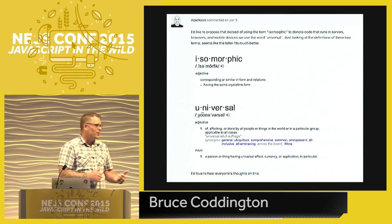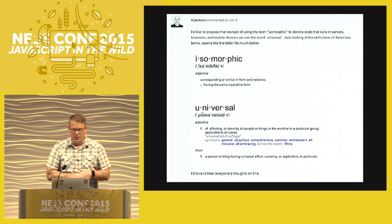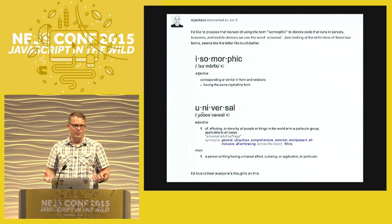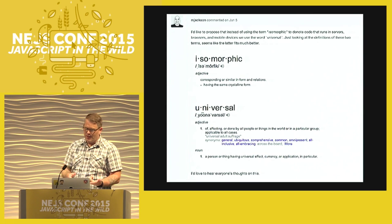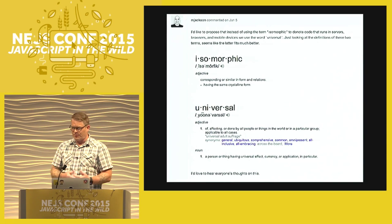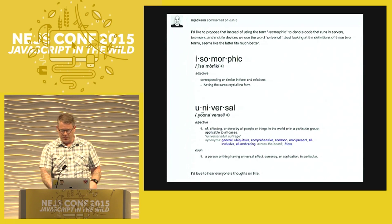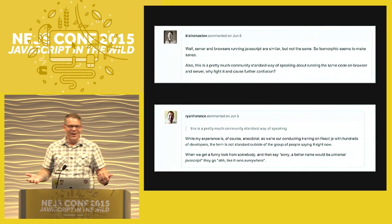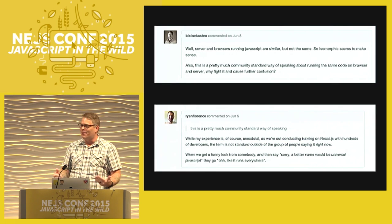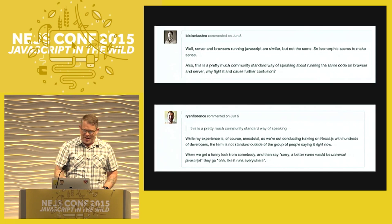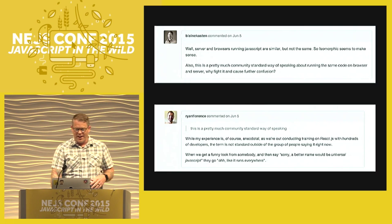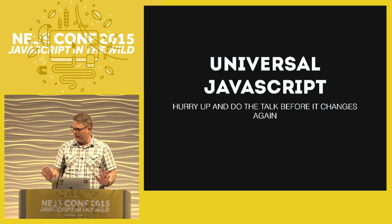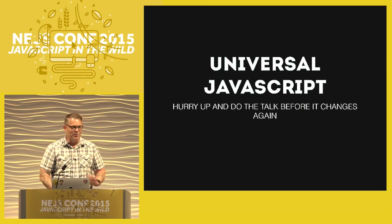The first thing I ran across is what we're going to call it. Michael Jackson, who is pretty active in the React community, proposed on Facebook's GitHub - because Facebook gets to decide what we name things apparently - to change from 'isomorphic' to 'universal' because of definitions. Our buddy Blaine Kasten said 'hey, we've been calling it isomorphic for at least two months.' Ryan came back and said we're all teaching it and people understand 'universal' more than 'isomorphic,' so we're going to change it. I'm going to hurry up and get this talk done before they change it again.